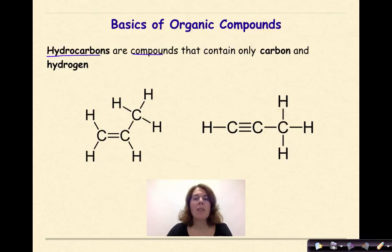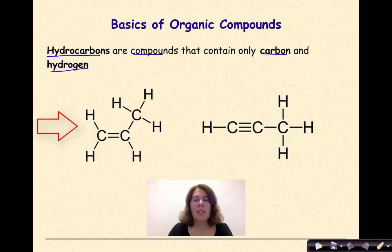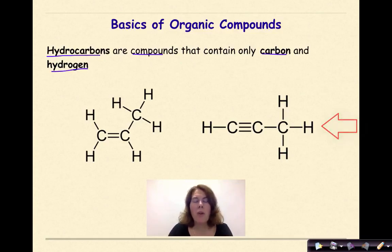Hydrocarbons are compounds that contain only carbon and hydrogen. So if someone refers to a hydrocarbon, the only elements involved in that compound will be carbon and hydrogen. We have two structures below: the one on my left has three carbons and six hydrogens, and the one on my right has three carbons and four hydrogens. They might have different structures associated with them, but they would both be called hydrocarbons.